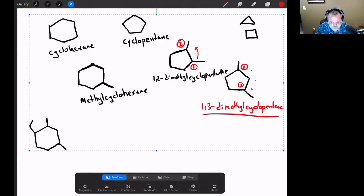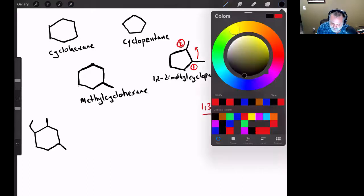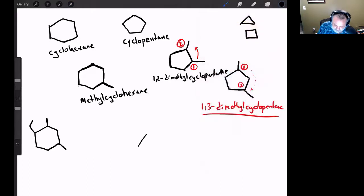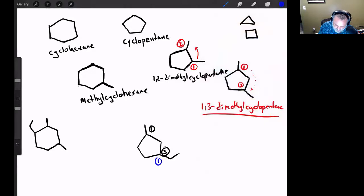So let's just do one more example that's similar to that. What about the same thing in the same locations, but I have an ethyl group instead of a methyl group? Well, if I were to follow those same rules, I could go one, two, three, or I could go one, two, three. Well, which one is correct? Because they're both different names and I need to be consistent with my naming.